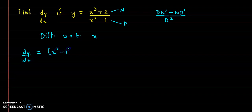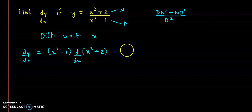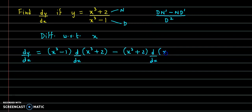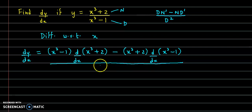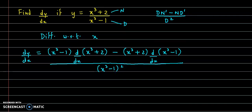that is x cube minus 1, into derivative of numerator that is x cube plus 2, minus then comes numerator, that is x cube plus 2, into derivative of denominator that is x cube minus 1, divided by denominator ka square, that is x cube minus 1 the whole square.